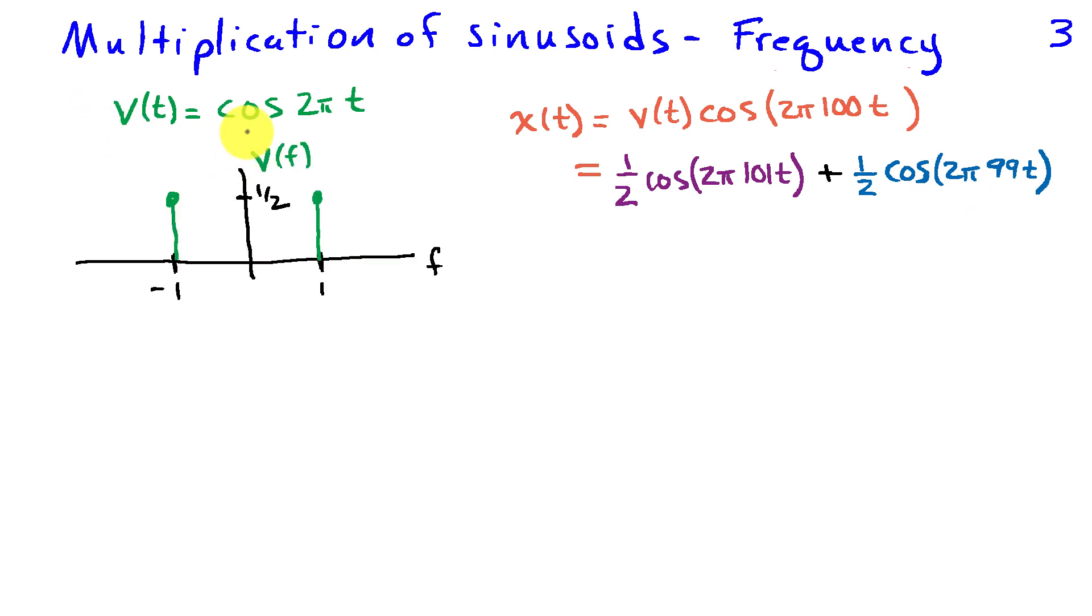So let's look at the spectra of these different cases. First of all, the spectra of V of t is going to have components at one hertz and the strength of those components is going to be one half. And when I look at x of t, I've got two sinusoids. One is at 101 hertz and that one is in the purple color. And so I've drawn the spectrum for the sinusoid at 101 hertz plus 101 and minus 101 hertz on the frequency axis.